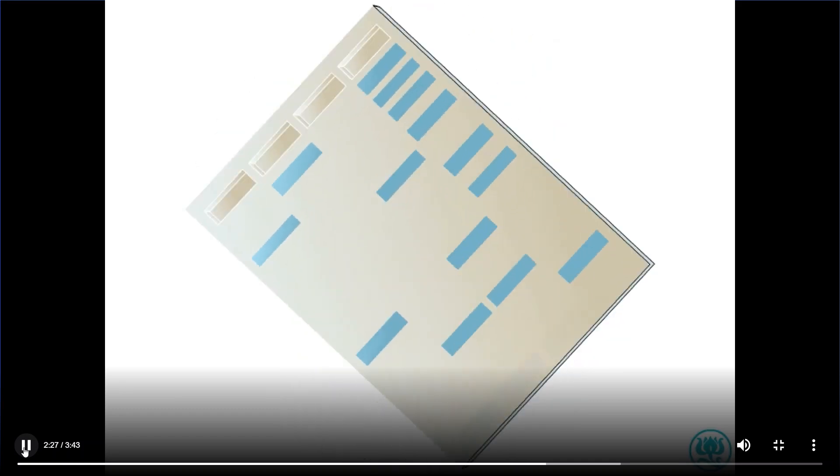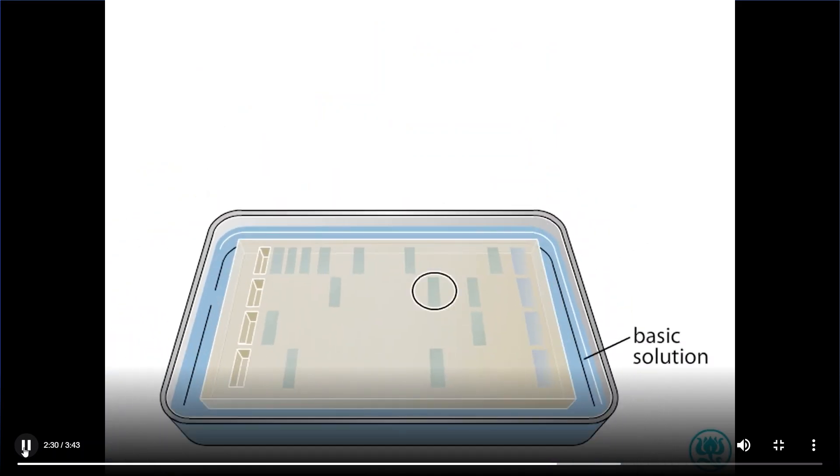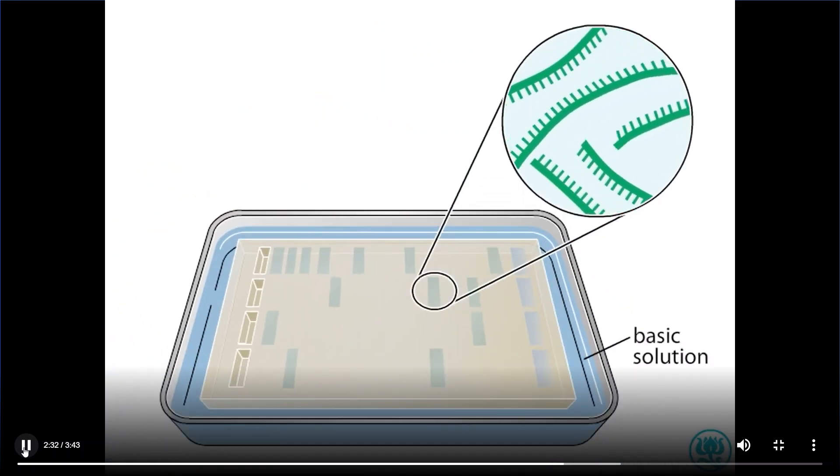First, the gel is soaked in a basic solution, so that the double-stranded DNA denatures into single strands.